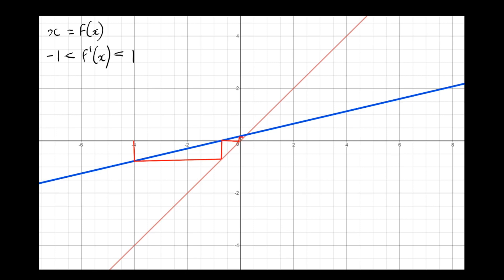And we can see it's converging towards this point here. So convergence is occurring in this case, and clearly, the gradient of this line here, the blue line, is between minus 1 and 1.